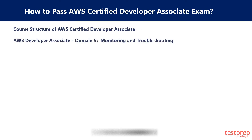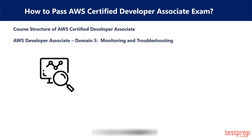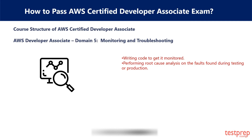Domain 5: Monitoring and Troubleshooting. This domain covers 12% of the weightage, in which you will develop skills to identify faults and how to monitor them. This section covers: first, writing code to get it monitored; and second, performing root cause analysis on faults found during testing or production.